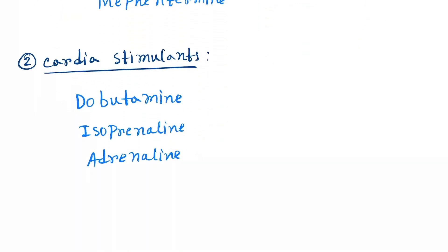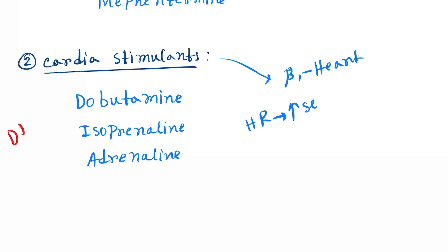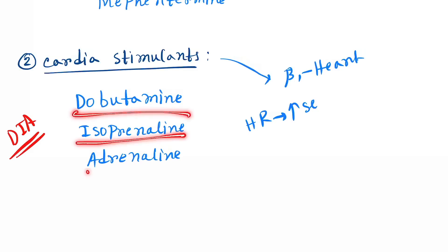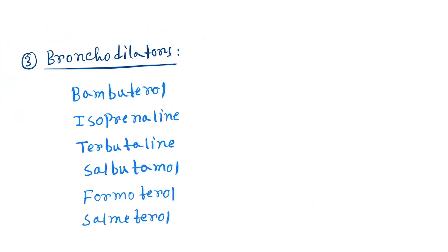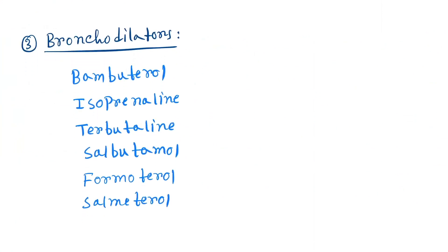Next are cardiac stimulants. The drugs act on the beta-1 receptor of the heart, so the heart rate will increase. The mnemonic is DIA — D for dobutamine, I for isoprenaline, A for adrenalin.